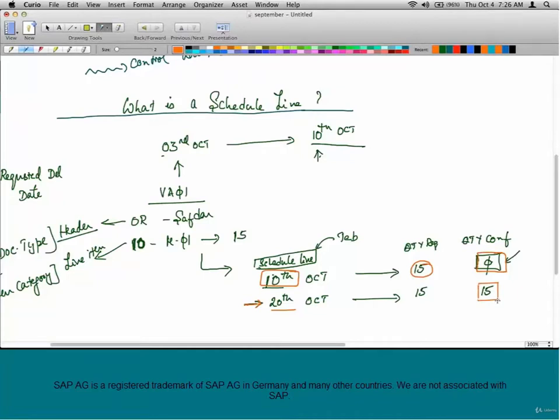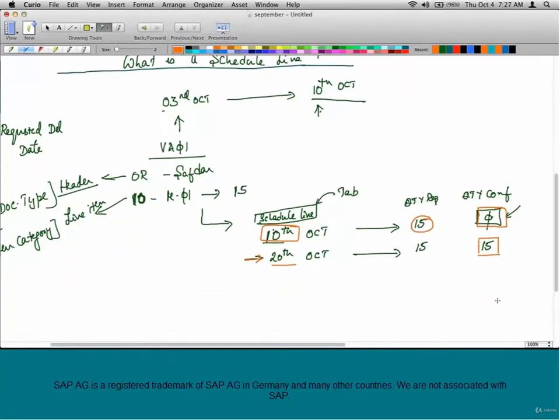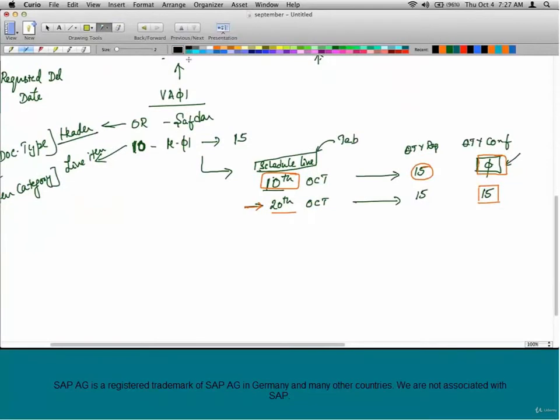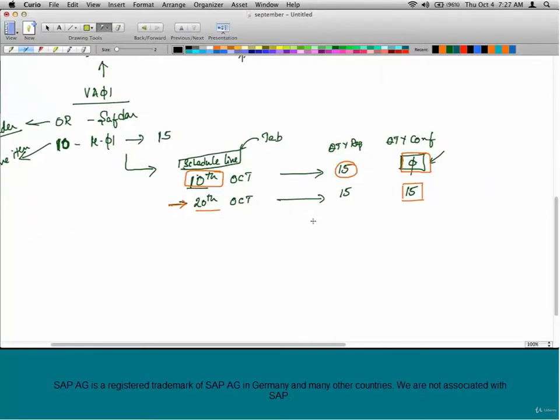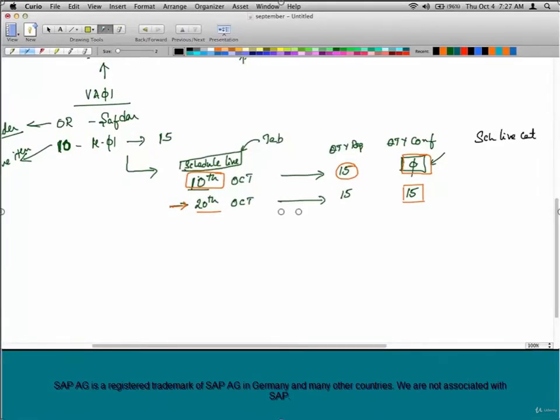So, let's not worry about how we arrive at the date with the 20th October date that the system has confirmed the goods for. We would not be able to understand it until we cover the availability check and scheduling chapter like I discussed before. But for now, just understand that the schedule line is where the confirmed quantity and the dates are available. Now that we know how the schedule lines are created,